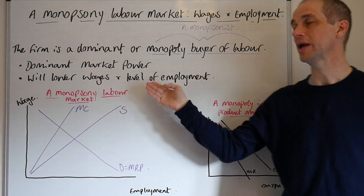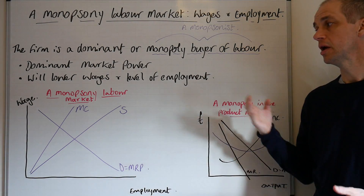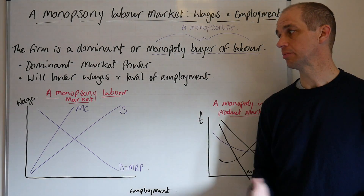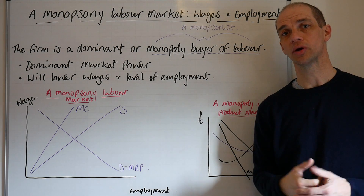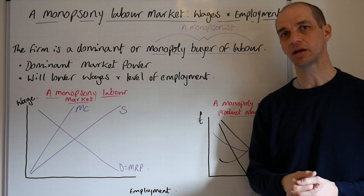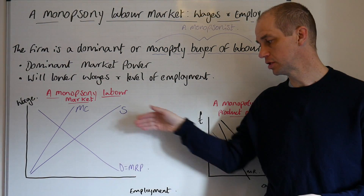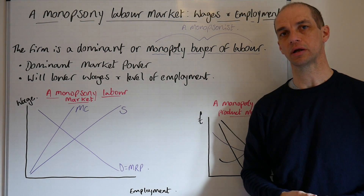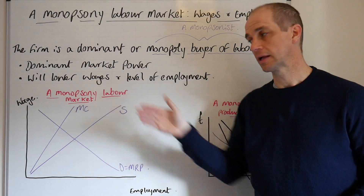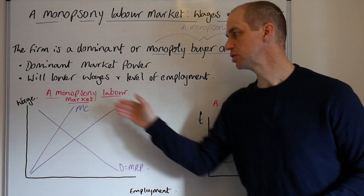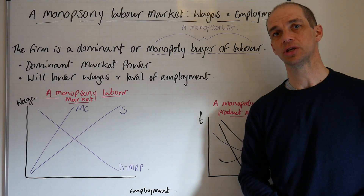They will often try to lower wages and the level of employment within a given marketplace. Now we've got a diagram which highlights a monopsony labour market, and I wanted to talk you through the actual price and output points because it's easy to make a couple of mistakes. Just to remind ourselves: the downward-sloping demand equals the marginal revenue product curve. We've got a negative slope because firms will want to substitute labour for capital in the longer term, and in the short term we face diminishing marginal returns.